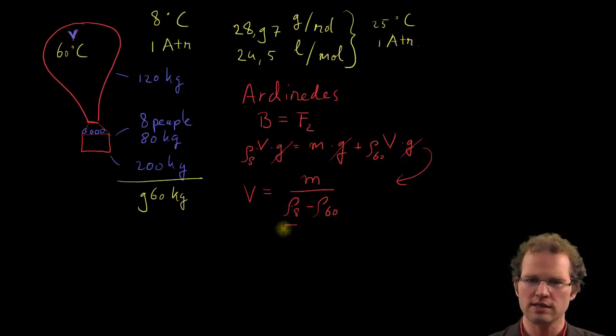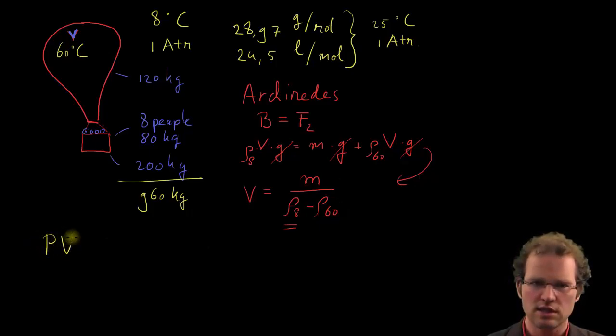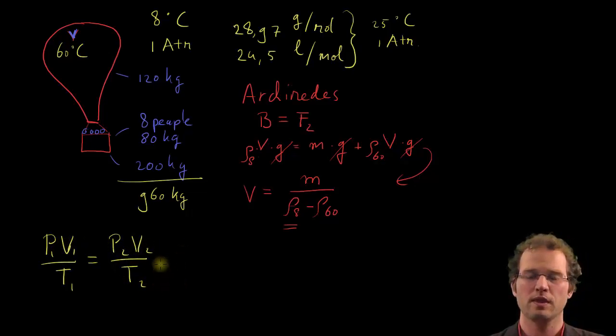But now, how do we get to the density at 8 degrees? Well, there's this ideal gas law that says that for every situation, so situation 1 or situation 2, the pressure times volume divided by temperature should come to the same number.